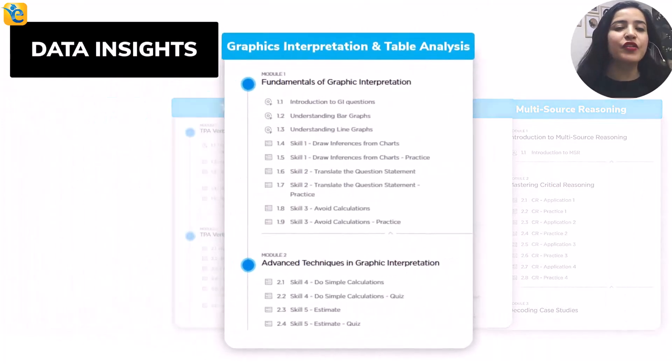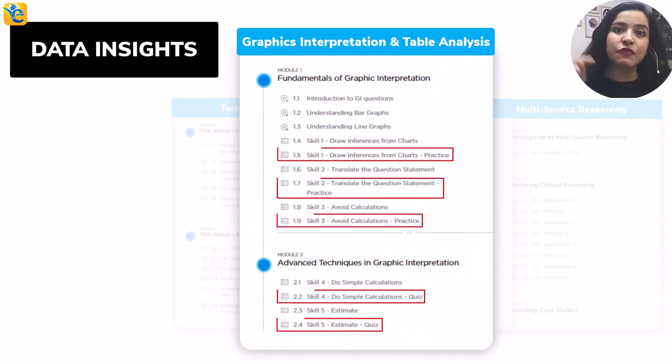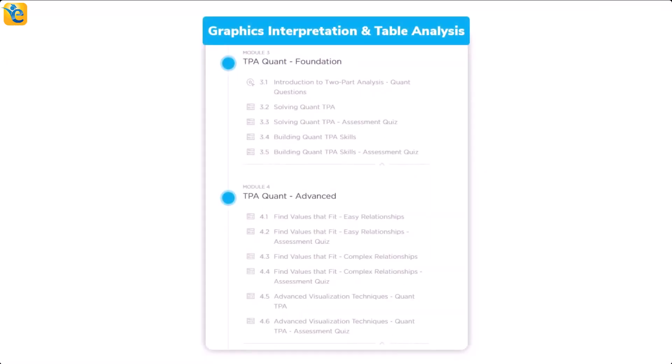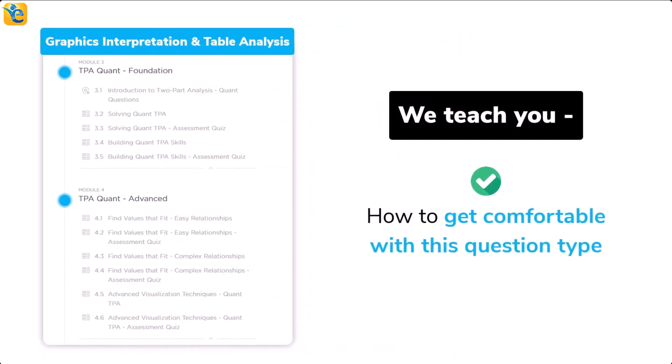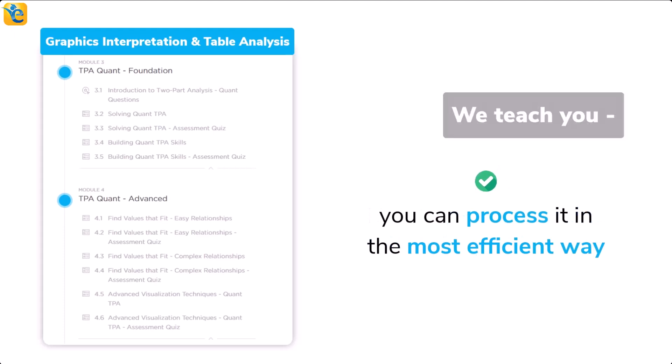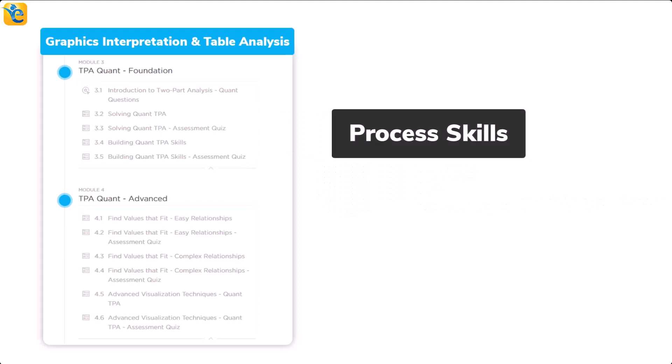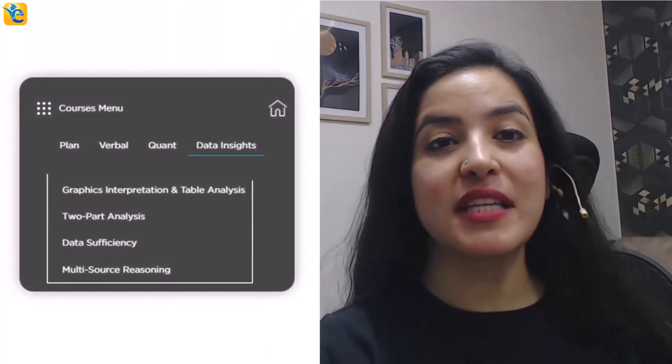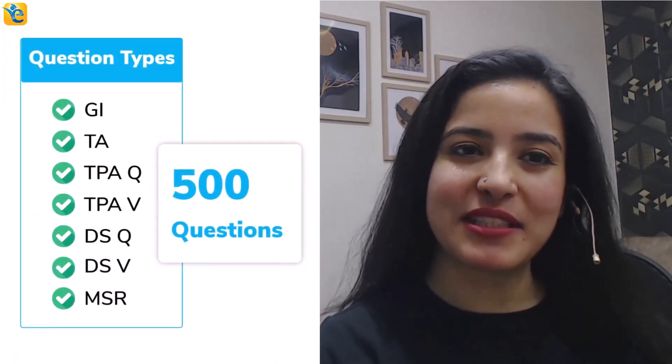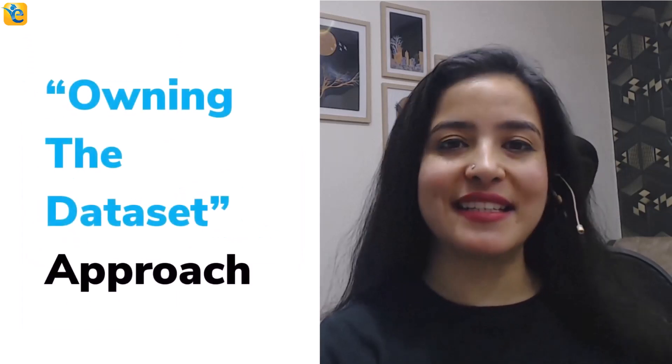Could you have arrived at the approach of solving this question with this level of clarity had you not spent the effort in thoroughly understanding the information presented? Such is the power of the process of owning the data set. We have created a course architecture that ensures we teach you this skill through every guided quiz in the e-GMAT DI course. In the TPA quant modules, we teach you how to get comfortable with this question type through around 500 questions, so you will learn such process skills and can comfortably use the owning the data set approach.